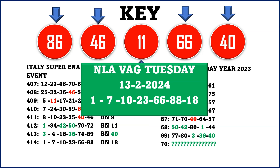Tomorrow, February 13th, 2024, for the NLA lotto system, you will need to try your luck on the numbers 1, 7, 10, 23, 66, 88, and 18. If the system continues to drop these numbers — any two, three, or more of them — then we can build our key by adding more two directs or three directs and include permutations. We will continue updating you until the system stops dropping the numbers. If numbers drop next week, I will come back with a new video to continue the research for Super Enalotto results number 415.